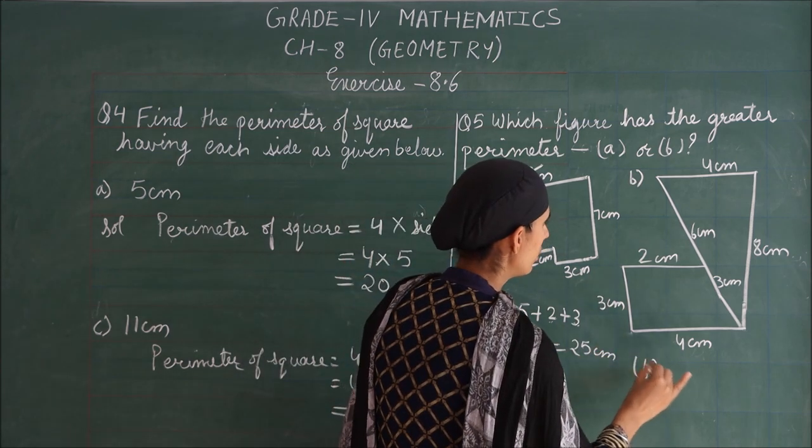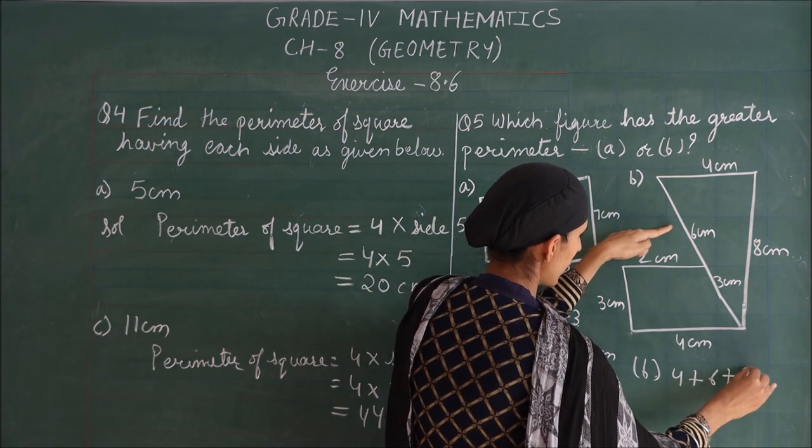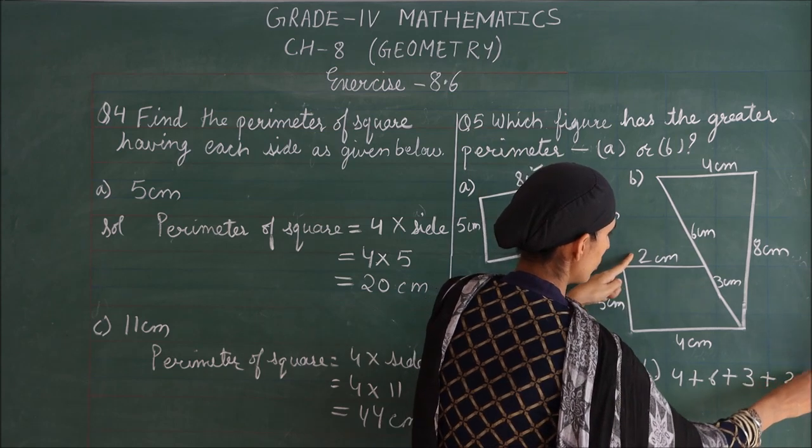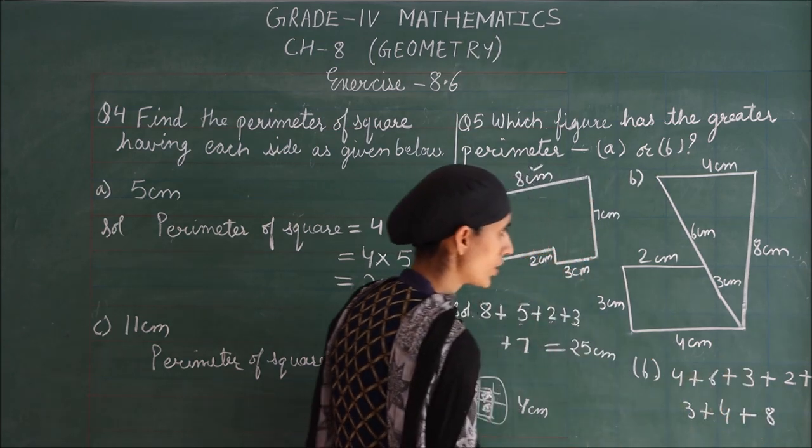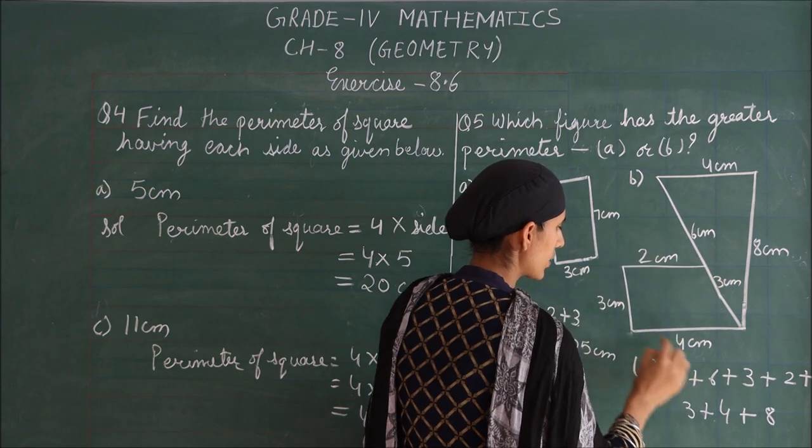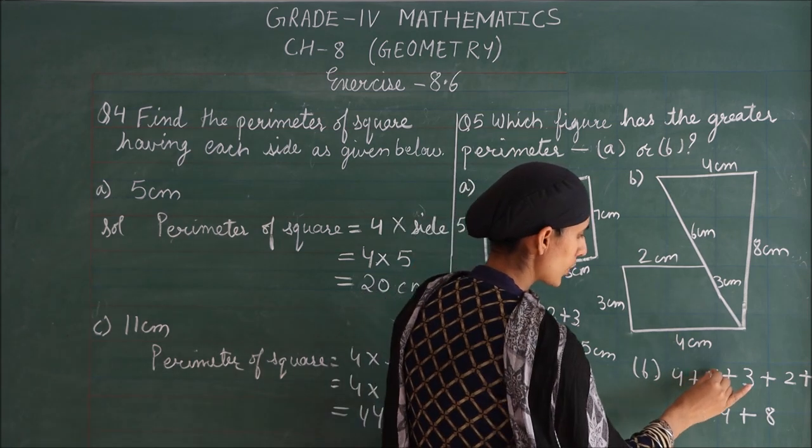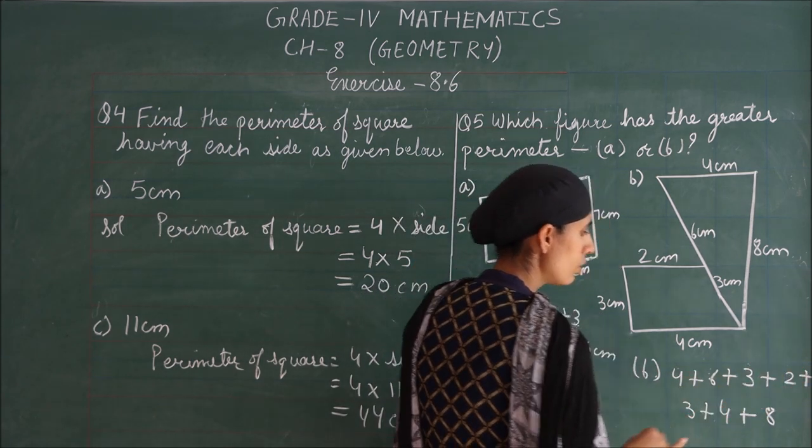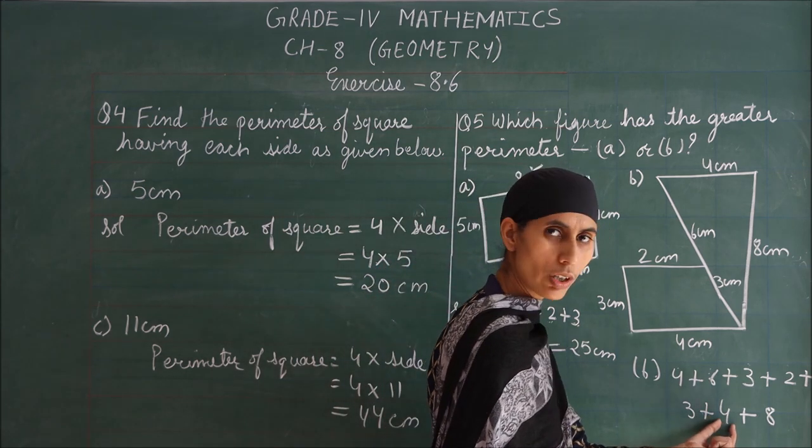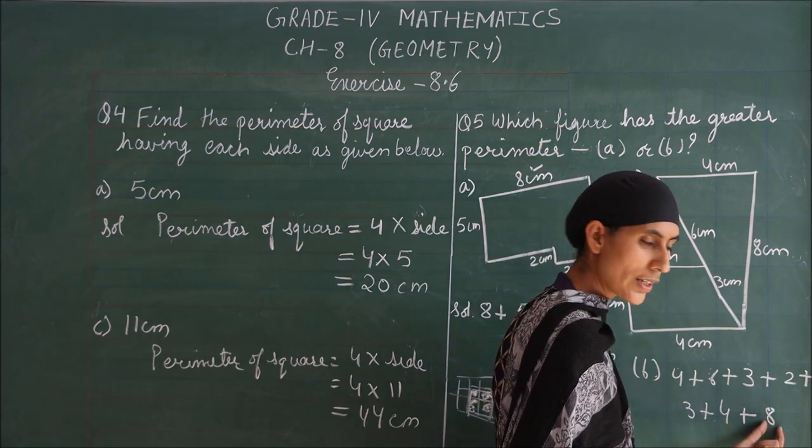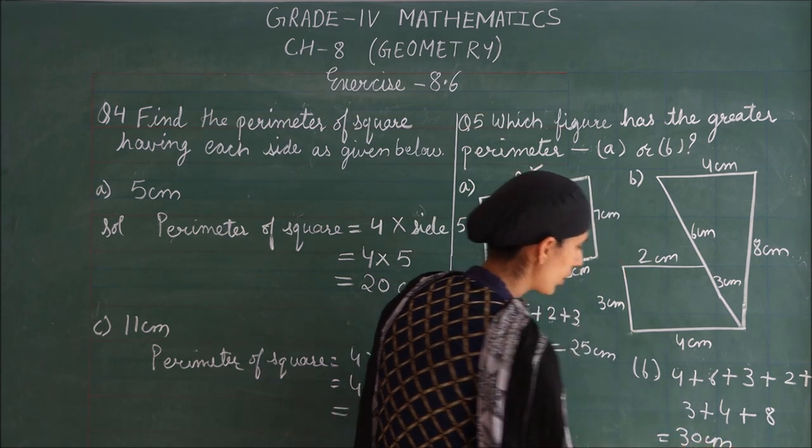Next, for figure B, we add: 4 plus 6 plus 3 plus 2 plus 3 plus 4 plus 8. That's 7 sides total. Let's calculate: 6 plus 4 is 10, 10 plus 3 is 13, 13 plus 2 is 15, 15 plus 3 is 18, 18 plus 4 is 22, 22 plus 8 equals 30. So figure B's perimeter is 30 centimeters.